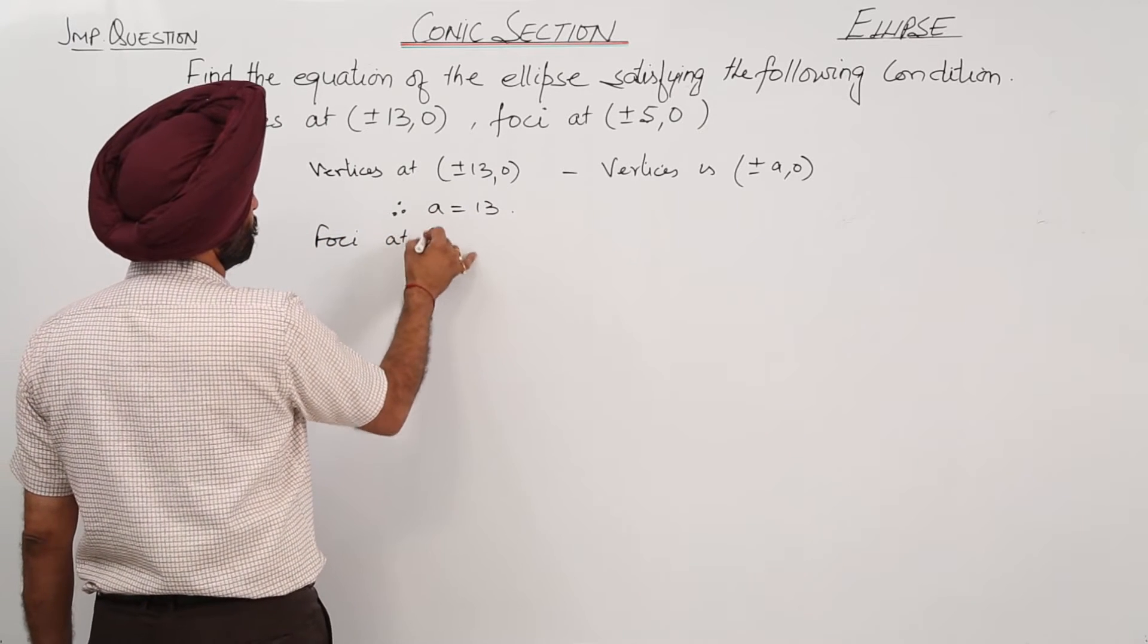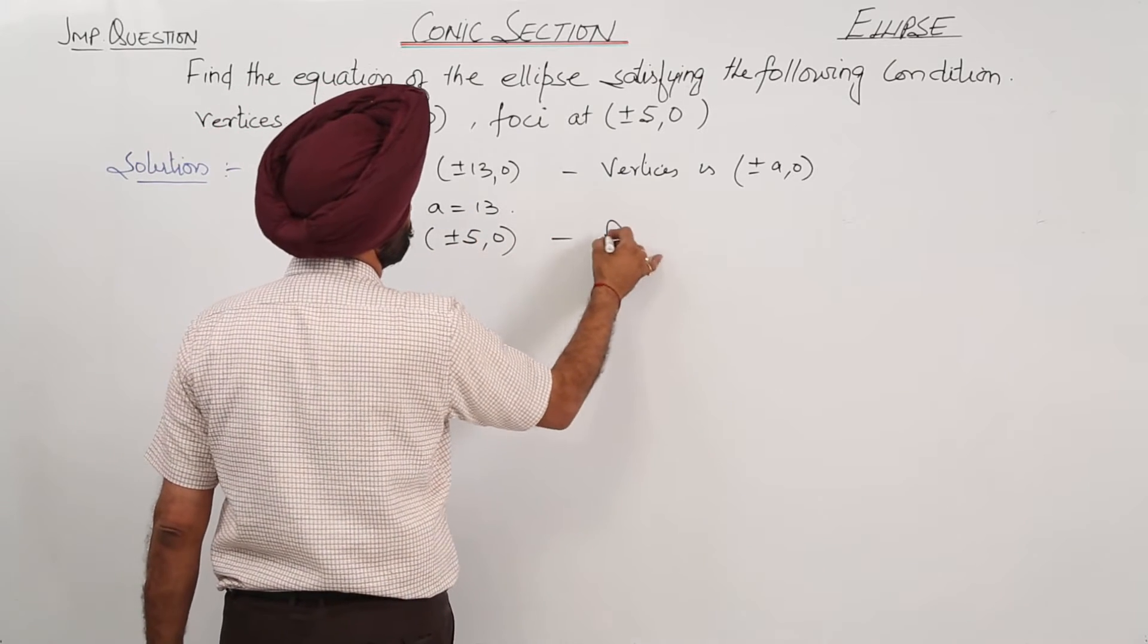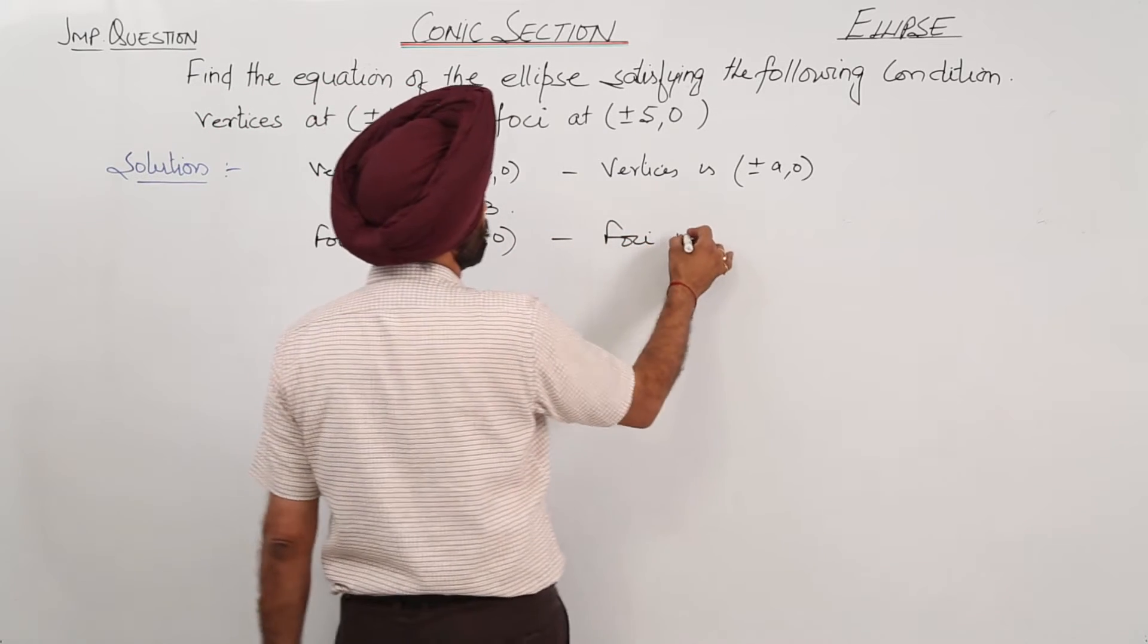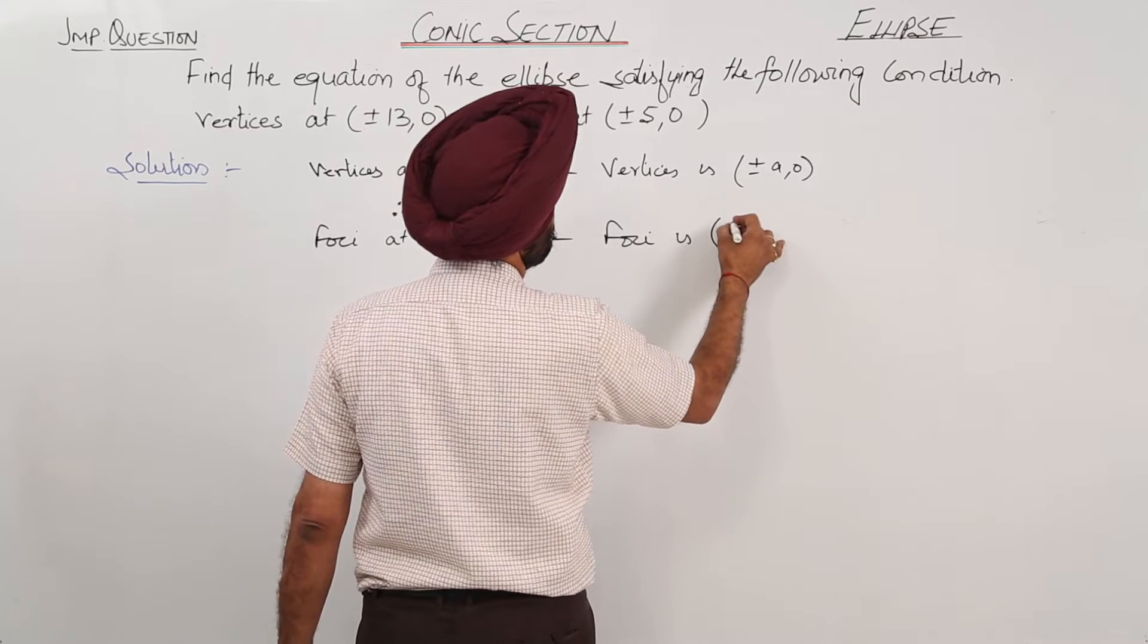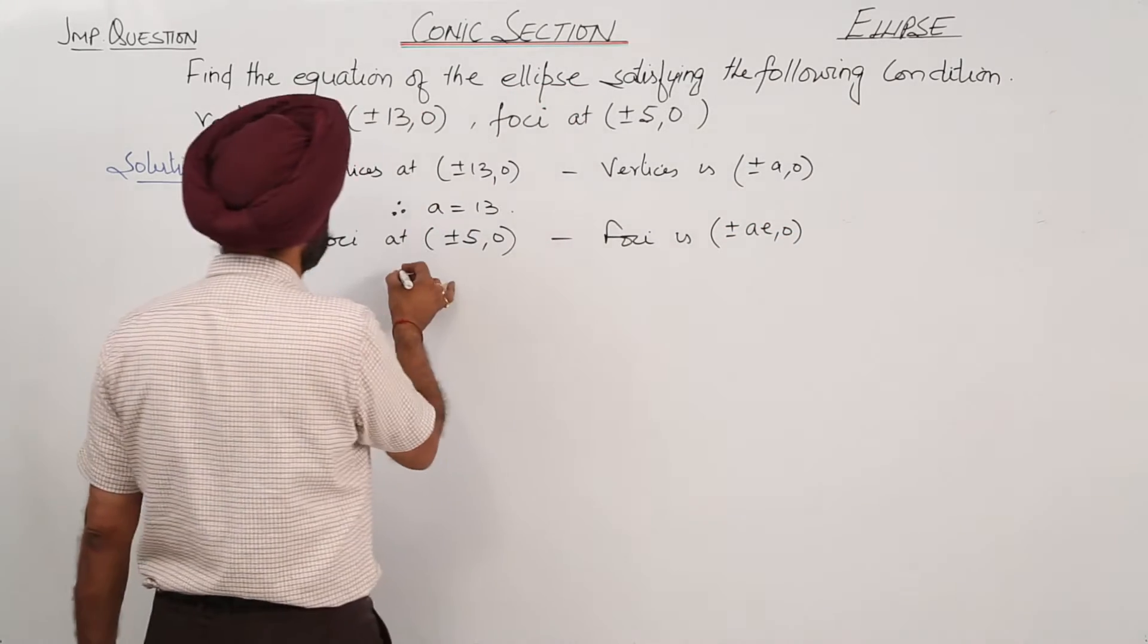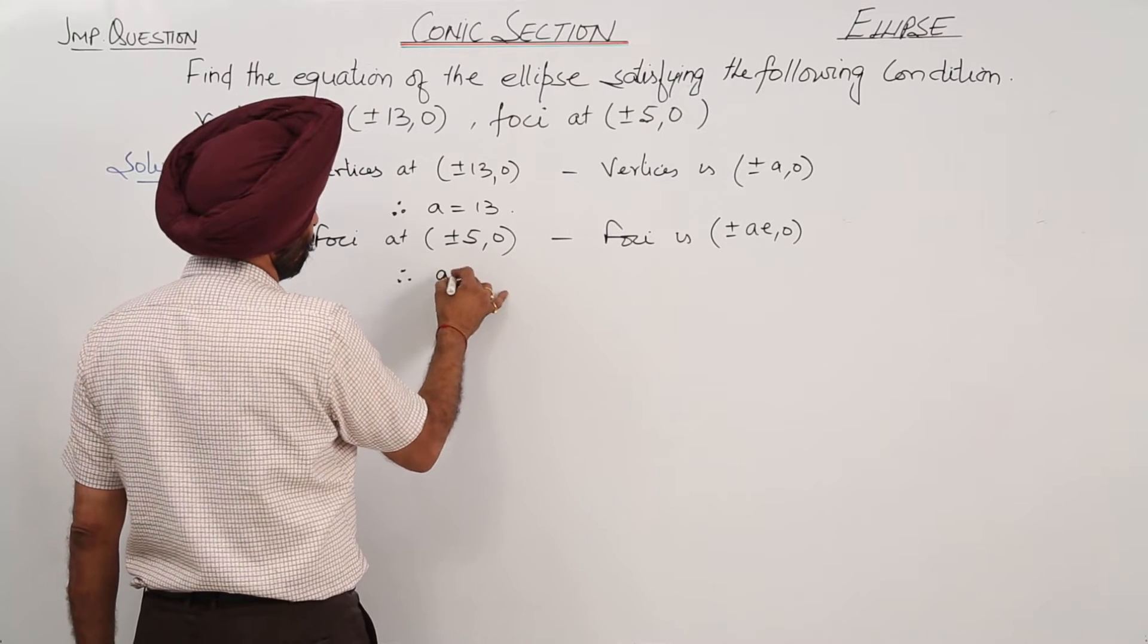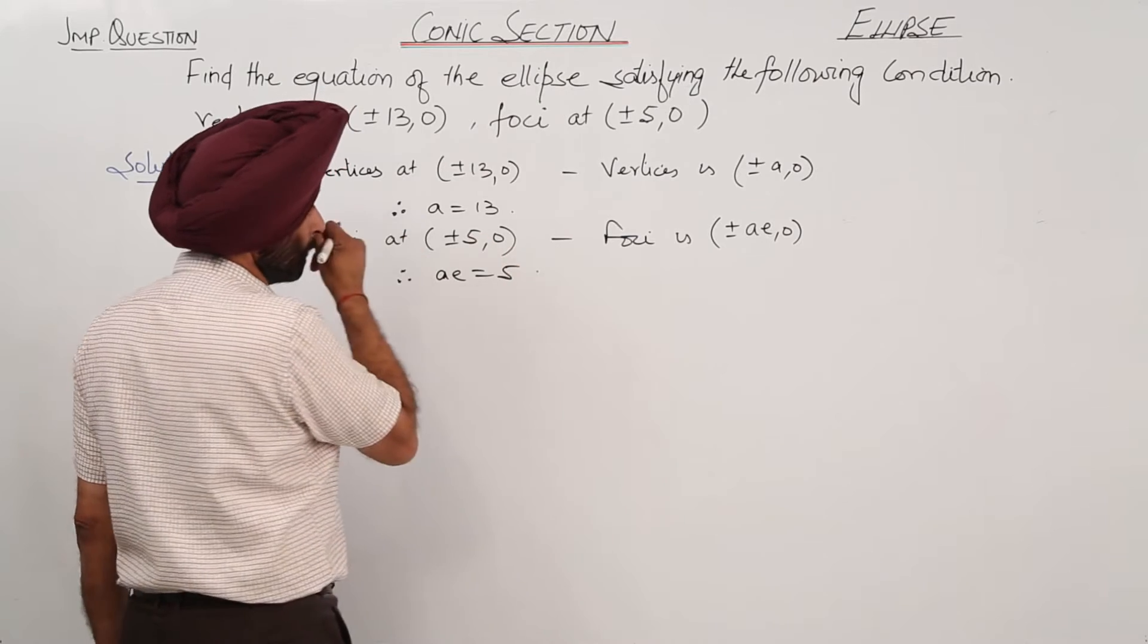Foci at plus minus 5 comma 0. Foci is plus minus a e comma 0. Therefore, a e is equal to 5.